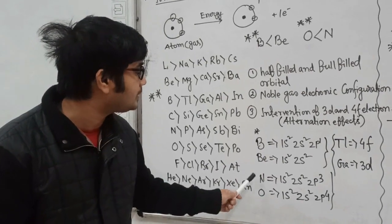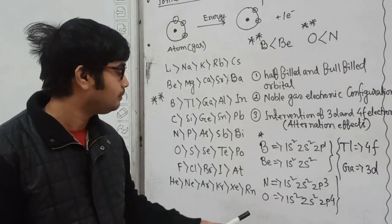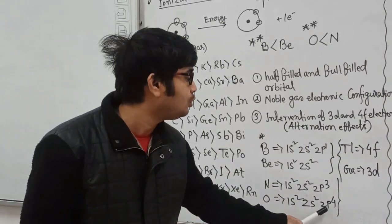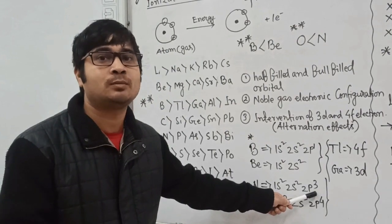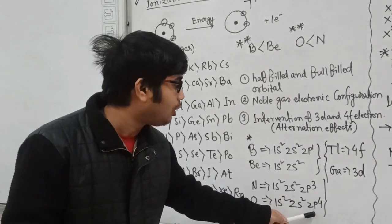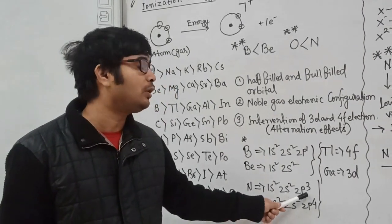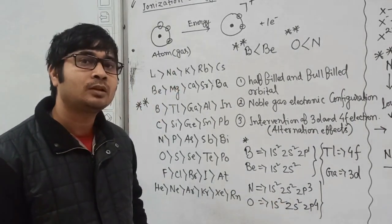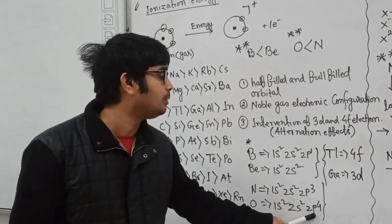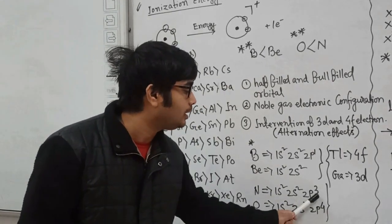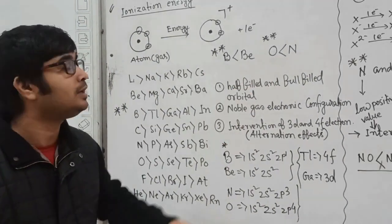Applying the same concept to nitrogen and oxygen: nitrogen has 1s², 2s², 2p³ and oxygen has 1s², 2s², 2p⁴. Now, 2p³ means it is half-filled. Half-filled orbitals are much more stable than orbitals that are not half-filled or fully-filled. So if we want to remove an electron from nitrogen's stable 2p³ configuration, we need much higher energy compared to oxygen. In oxygen's case, we remove an electron from 2p⁴, and after removal it becomes half-filled, gaining some stability. That is why nitrogen has higher ionization energy than oxygen.